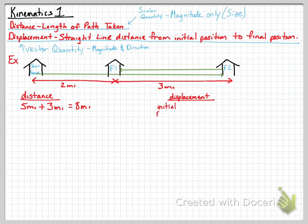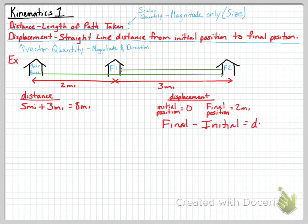Displacement is a little bit different. For distance it was easy — how far you walked is your distance. For displacement it depends on your position. Your initial position where you started was zero, and your final position is where you ended up, which is friend one's house, two miles from your house. So displacement is defined as final position minus initial position, which is two miles minus zero miles, equaling two miles.